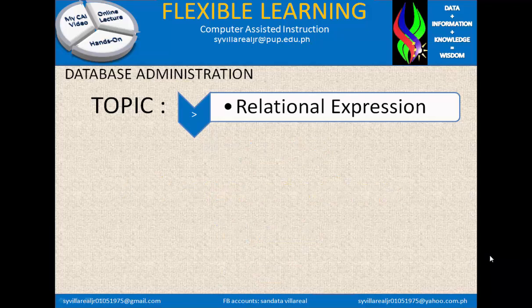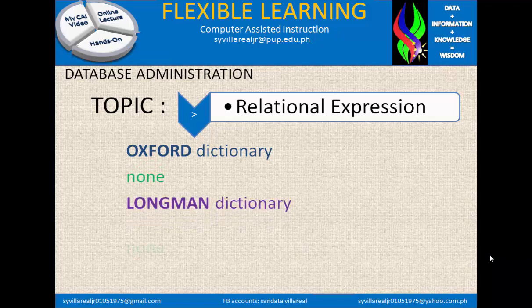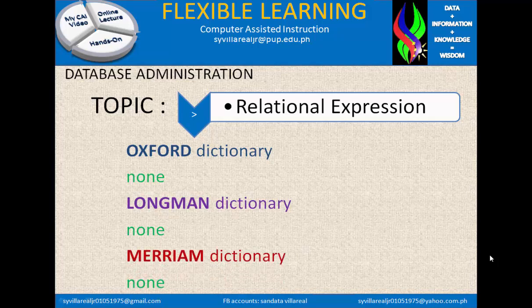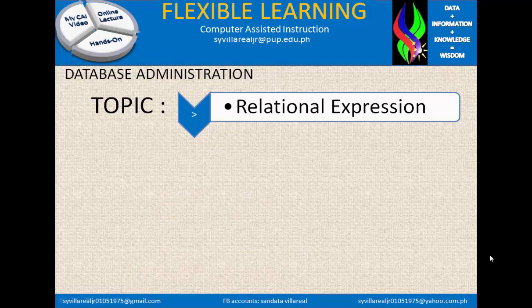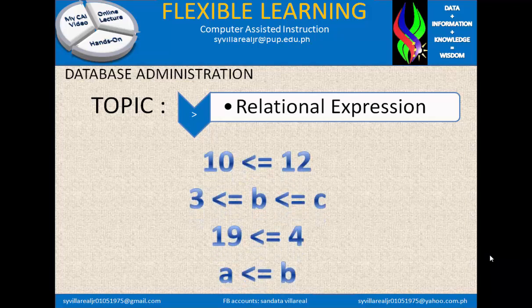Next is less than. What is less than? In Oxford, Longman, and Merriam Dictionary, there is also none. An example: 10 is less than or equal to 12 — which is true. 3 is less than or equal to B, and less than or equal to C — answerable by true or false. 19 is less than or equal to 4 — this is false. And A is less than or equal to B — answerable by true or false.